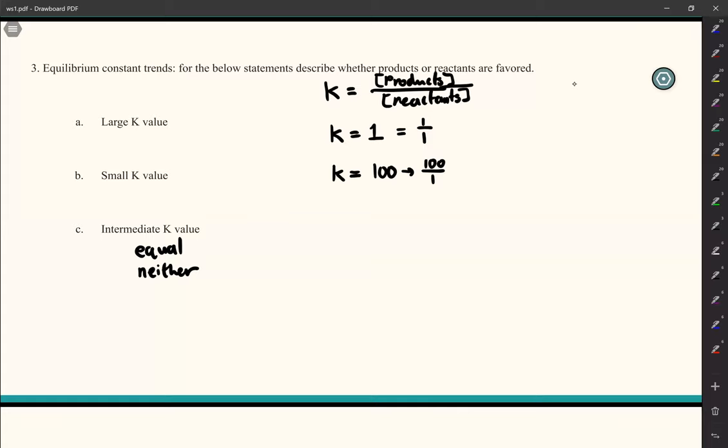So for 3A, you could put products. B, you can imagine, is the opposite of that. So if I had a K that is 0.01, and this mathematically is the same as 1 over 100, then we could say that there's still a 100 fold difference, but this time it's the reactants that would be 100 times the amount of products that you have. And in that case, your reactants would be favored.